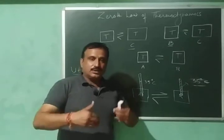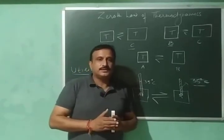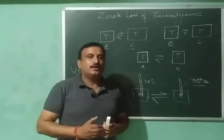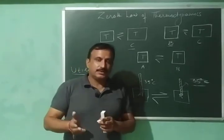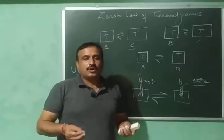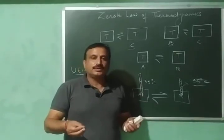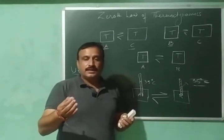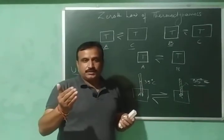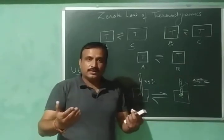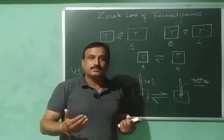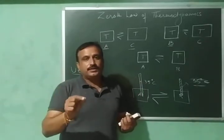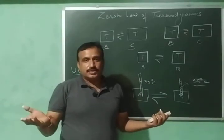In this way, we can compare the degree of hotness of the two bodies, and this is the utility of the zeroth law of thermodynamics. Even when we measure the temperature of our body and insert the thermometer in our mouth, the mercury level starts rising and stops at a point where our body and the thermometer are at thermal equilibrium. The reading of the thermometer at that point is called the temperature of our body.